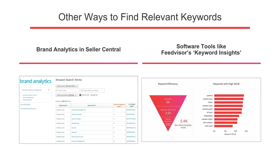There are also really great software tools like FeedVisor's Keyword Insights tool, which take all that manual work out of researching what keywords your competitors are ranking for, what keywords you're currently ranking for, and where the high potential keywords are. Without software like Keyword Insights, you would be spending hours and hours doing keyword research when software is more than capable of doing the heavy lifting for you.